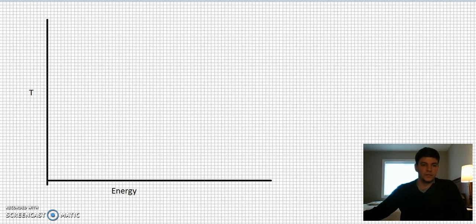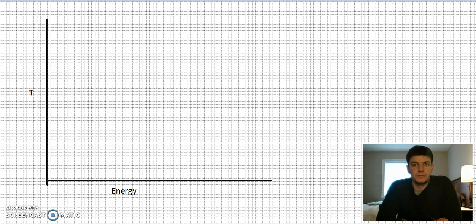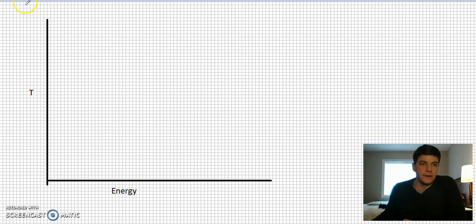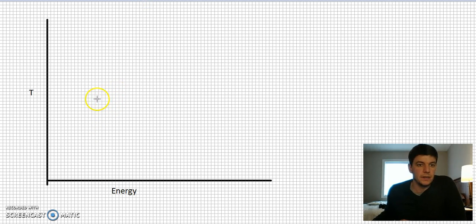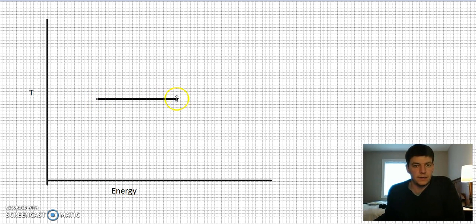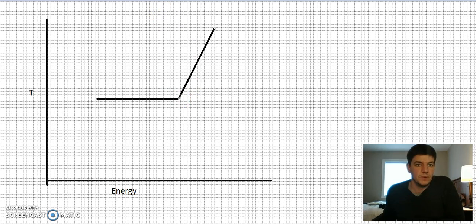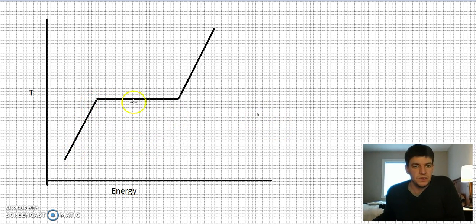In the last video we talked about the relationship between temperature and pressure during evaporation or a phase change. To recap: during boiling, we had a constant temperature, and that related to the saturation pressure and saturation temperature inside our steam tables. If we escaped that boiling point, we could either superheat or heat up that liquid.